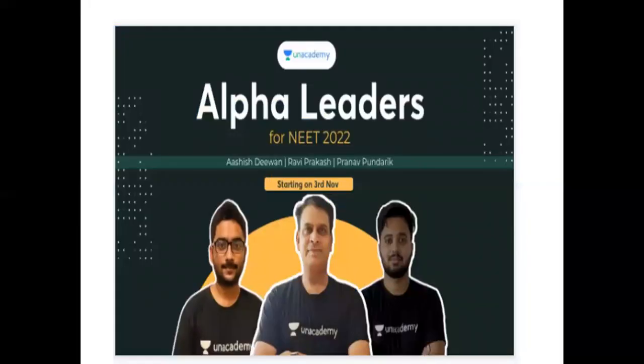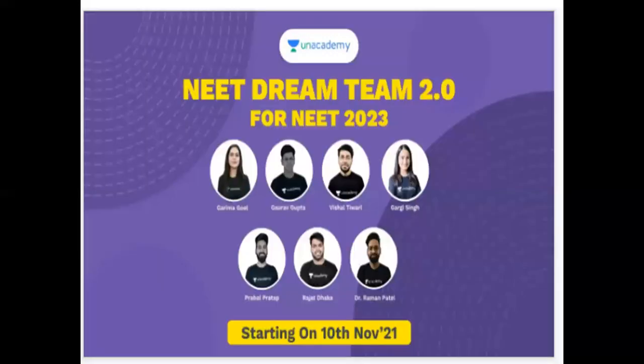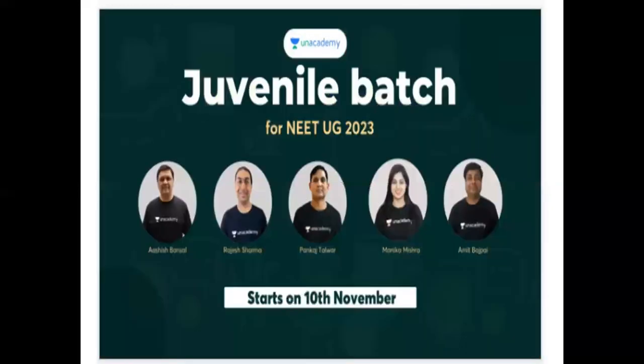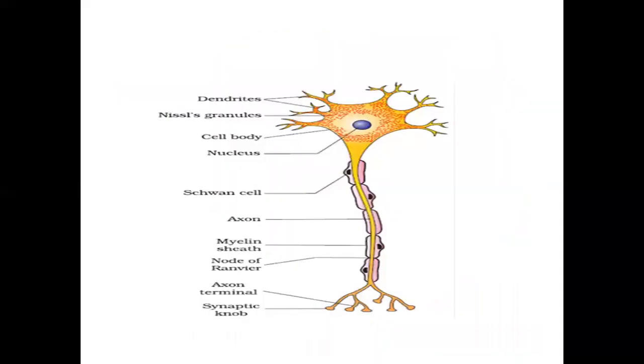Batches starting soon include Alpha Leaders NEET Dream Team starting 3rd November, Pinnacle Batch on 10th November, and Juvenile Batch on 10th November. Many batches are running on Unacademy - it's the best platform to crack NEET extensively. Today's topic is synapse and TNP.